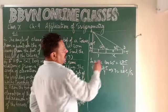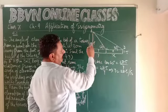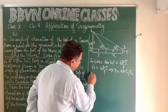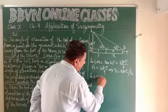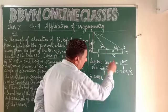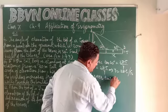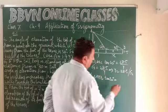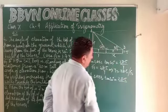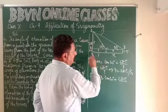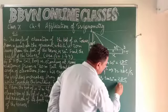Now for the 30° angle, in triangle ABD: tan 30° equals perpendicular 28.5 upon base (x + y). 1/√3 = 28.5/(x + y), so x + y = 28.5 × √3.